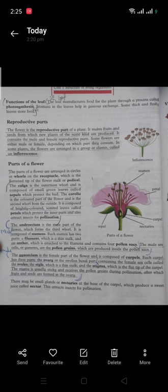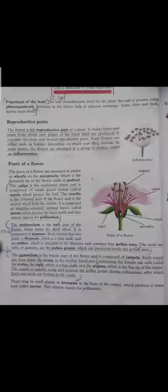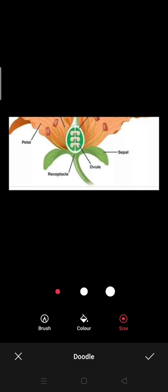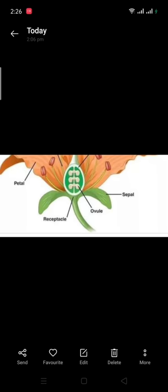The parts of a flower are arranged in circles or whorls on the receptacle, which is the flattened tip of the flower's stalk or pedicle. This is a receptacle, and this is the pedicle. The pedicle is the part from which the flower is attached—the junction by which the flower is attached to the stem.